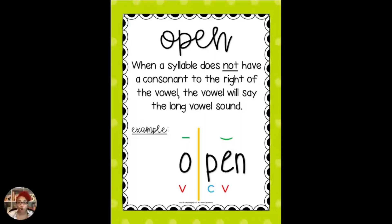The second syllable is 'pen,' and the E makes the short vowel sound, so 'pen' is actually a closed syllable while 'o' is an open syllable.